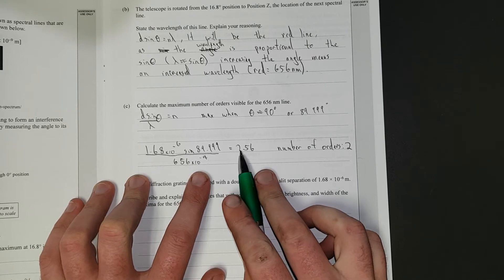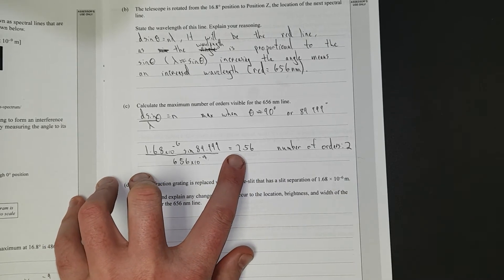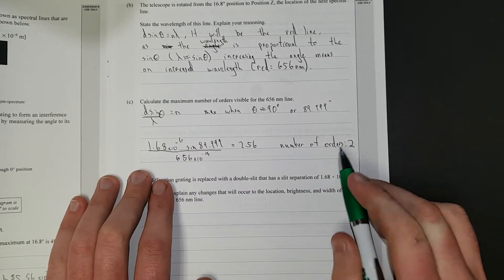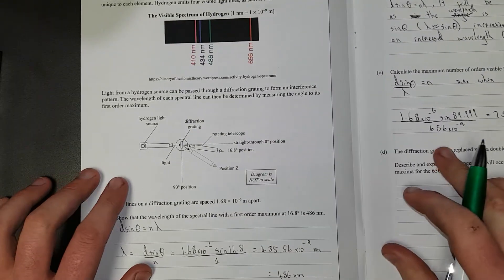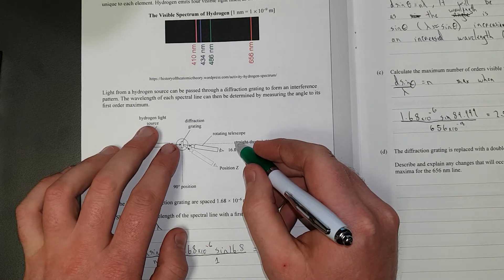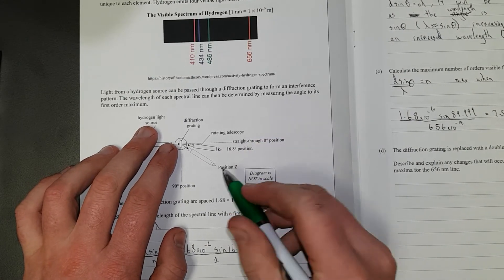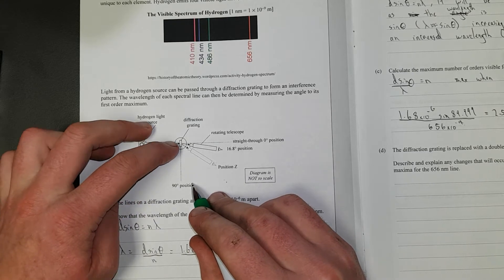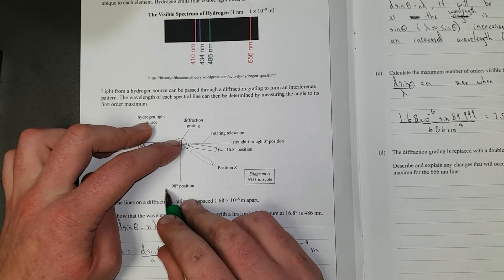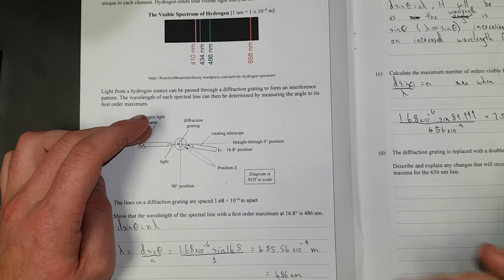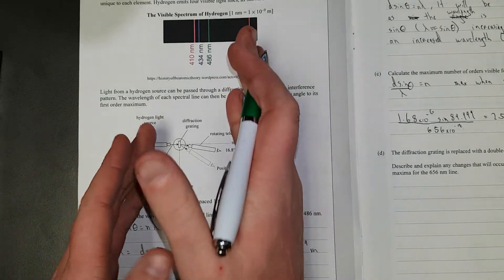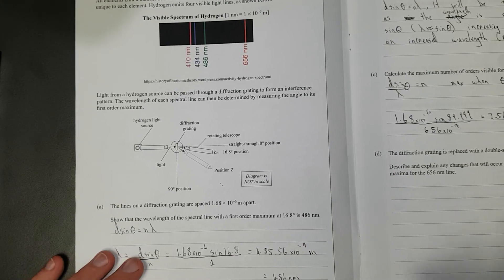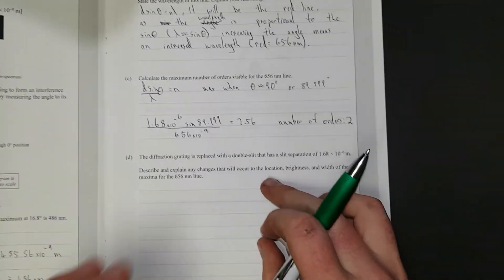2.56 number of orders 2. This, 2.56 means you get 2 and a half maximas. There's no such thing as half a maxima. The next maxima is off the board. So you gotta round down to 2. Here's an example. So you'd have your first maxima here. Your second maxima would be somewhere over here. Your third maxima would be over here, which is impossible. You wouldn't be able to project that onto a screen if it's over here, because it'd be going backwards. And even then it can't go backwards, because it's not a reflection. Anyway...